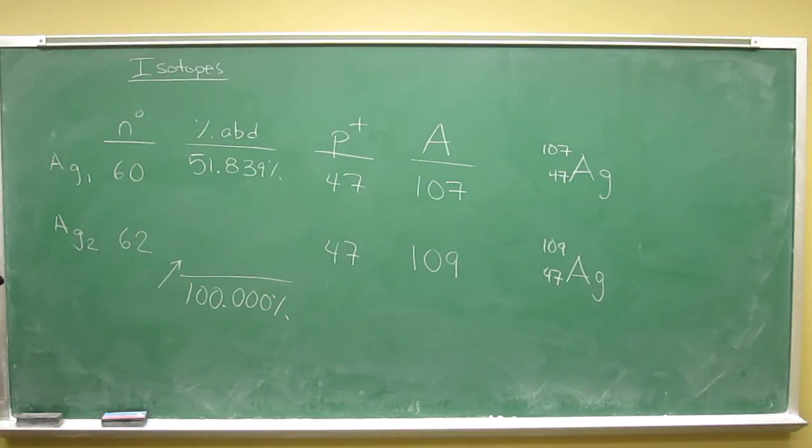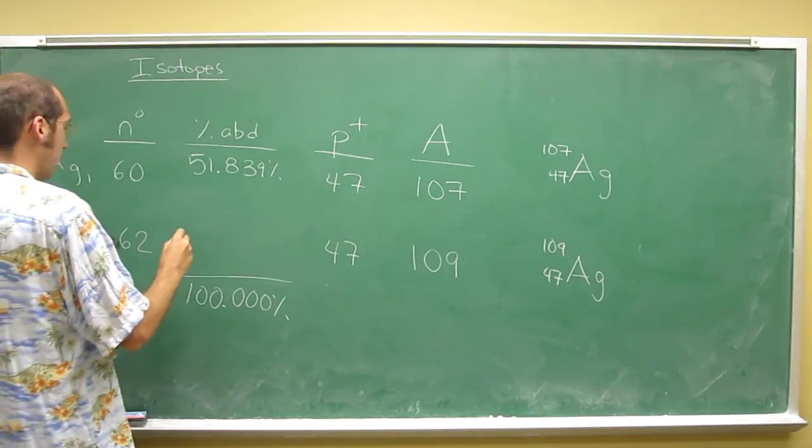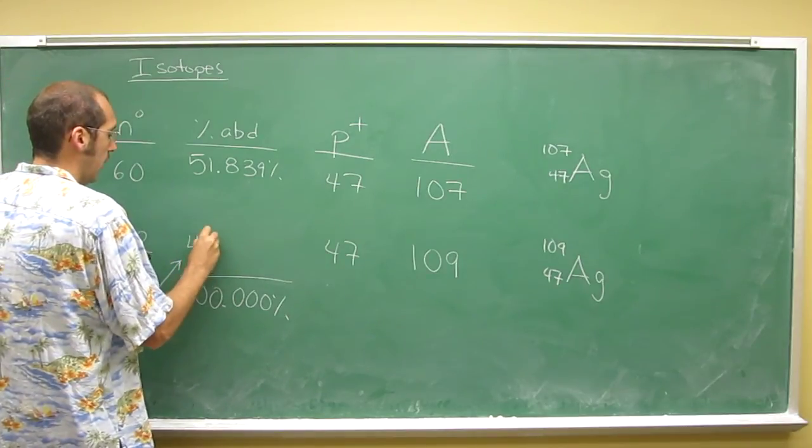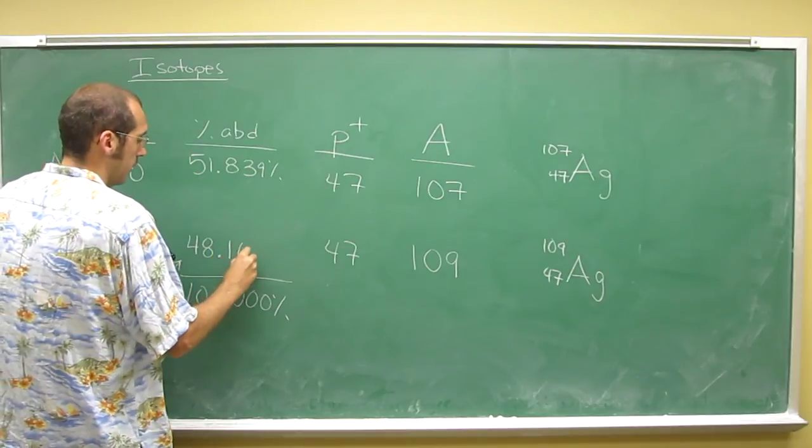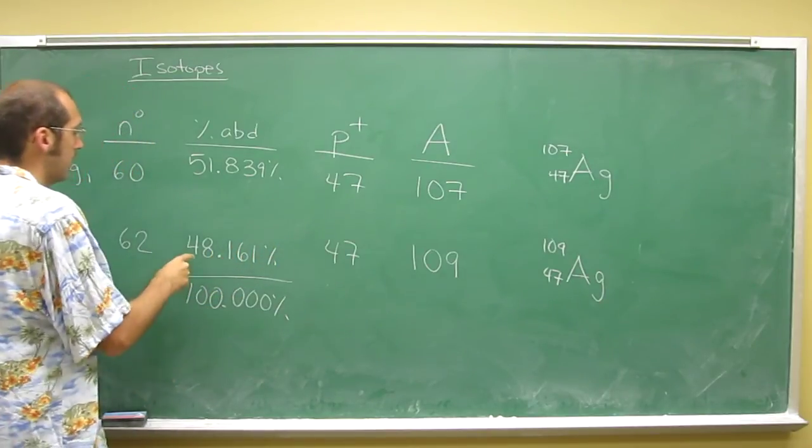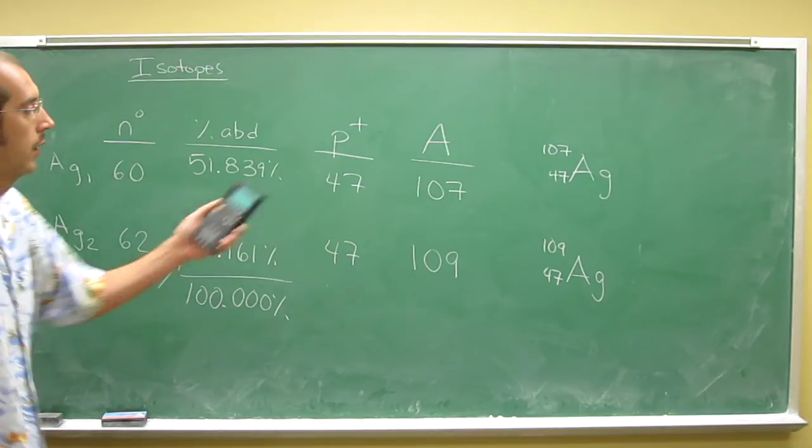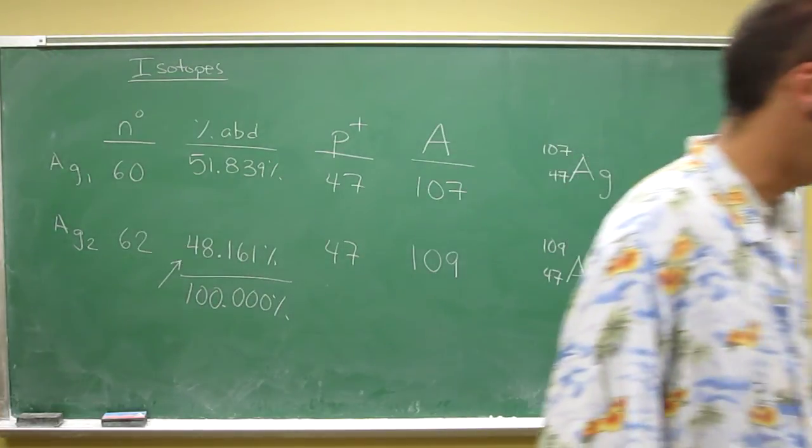So if there's only these two, you just take 100 and subtract 51.839 from it, and you get 48.161 percent. So that's the percent abundance of silver 109.